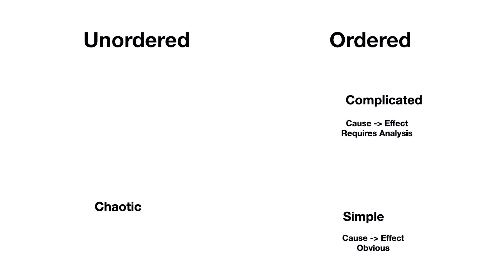On the unordered side of the systems, we can conceive of systems that appear to be chaotic. Chaotic is defined as where the relationship between cause and effect is non-existent — there is no relationship. An example would be: I'm walking through a forest and trees start exploding. It would feel very chaotic from my perspective, and we would usually just act to get out of that situation rather than analyze it.